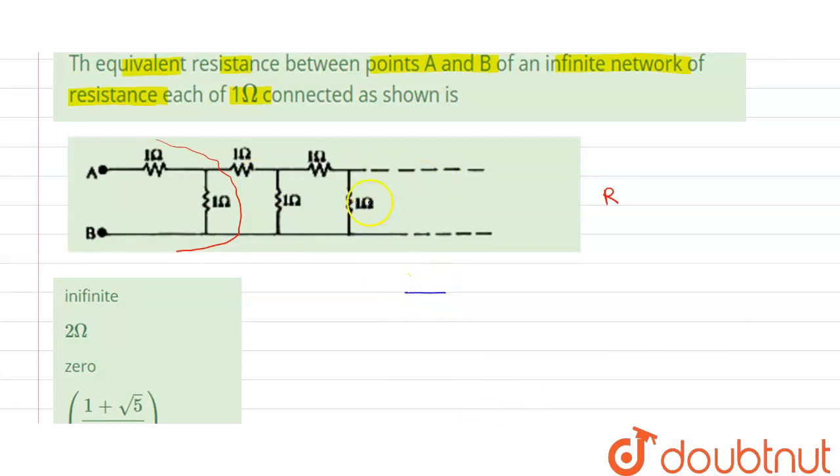Suppose the remaining is R, that is equivalent R. So this will be 1 ohm. This will be 1 ohm. A, B.